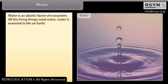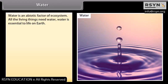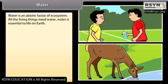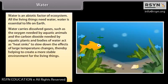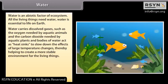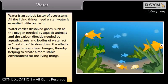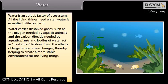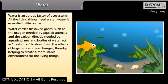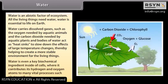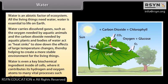Water is an abiotic factor of the ecosystem; all living things need water as it is essential to life on earth. Water carries dissolved gases such as oxygen needed by aquatic animals and carbon dioxide needed by aquatic plants. Bodies of water act as heat sinks to slow down the effects of large temperature changes, helping create a stable environment. Water is also a key biochemical ingredient inside cells, contributing hydrogen and oxygen atoms to vital processes such as photosynthesis.